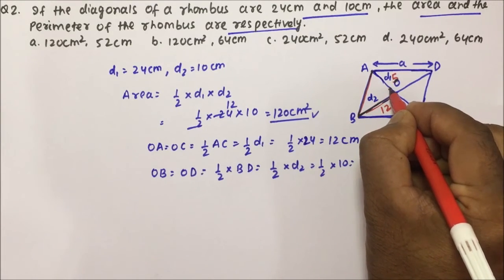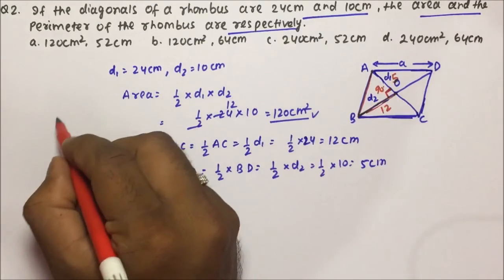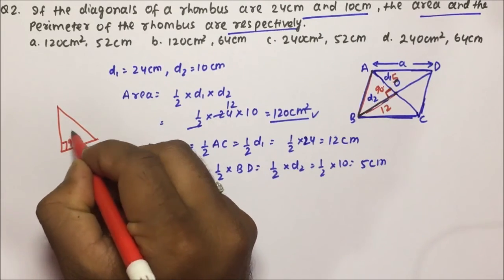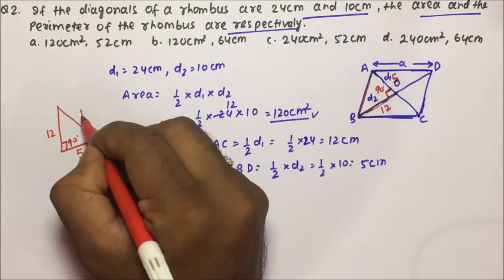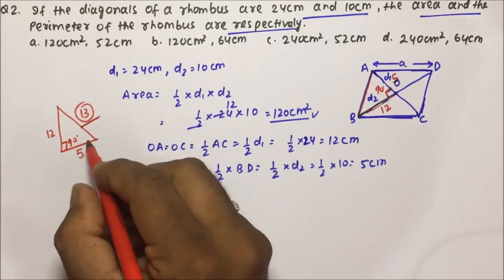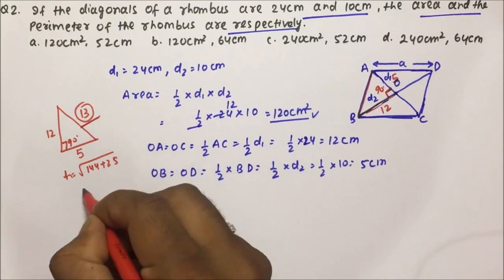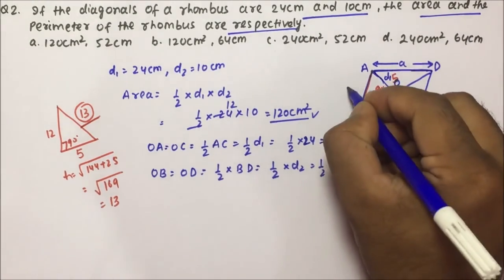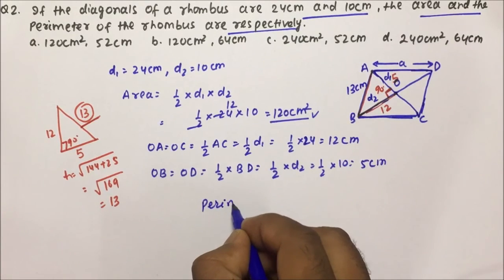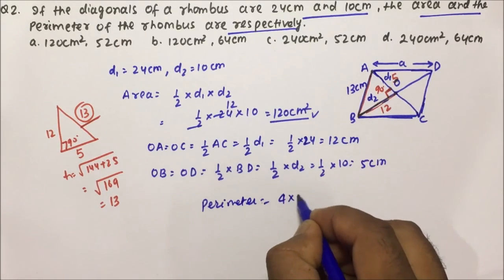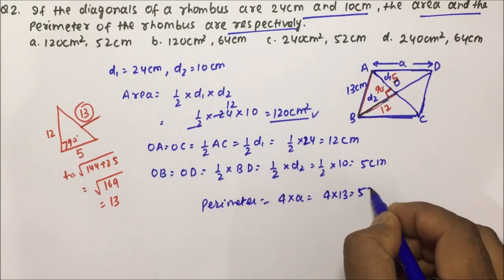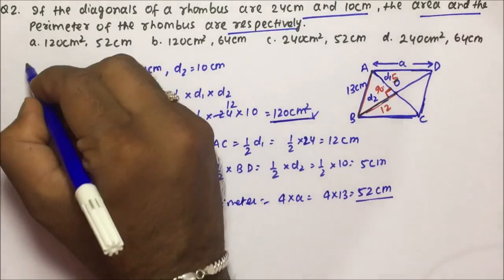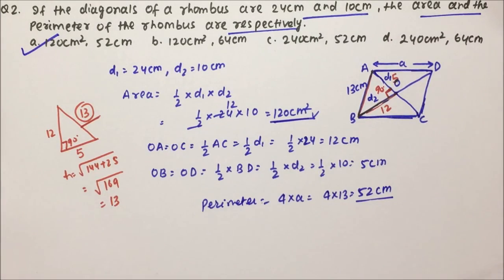Since the diagonals are perpendicular, this forms a right angle of 90 degrees, with legs 12 and 5. Using the Pythagorean theorem: hypotenuse squared equals 144 plus 25 equals 169, so the side equals 13 centimeters. Perimeter equals 4 × a, so 4 × 13 equals 52 centimeters. Therefore, 120 centimeter square and 52 centimeters is the correct answer — option A. I hope you understood the questions on mensuration and rhombus. Thanks a lot for watching the video.